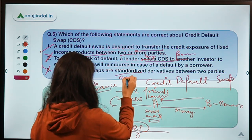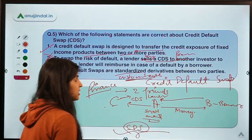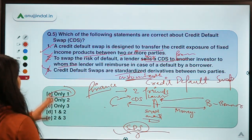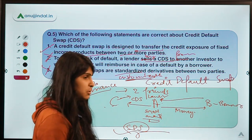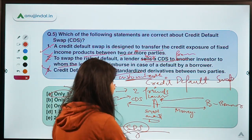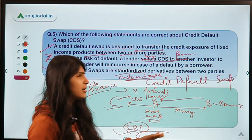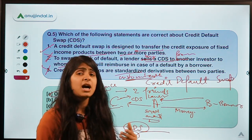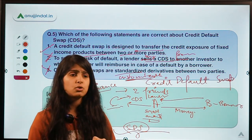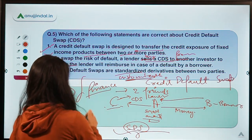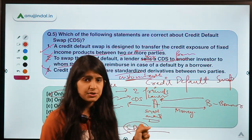Statement 3 says CDS are standardized derivatives. This is also incorrect — CDS are not standardized; they are easily customizable or tailor-made. The parties entering into such agreements can decide terms and conditions by their own will. That is why only statement 1 is correct and the other two are false. Credit default swaps are very risky and complex derivatives because someone is essentially betting on someone defaulting, which amplifies risk in the system.